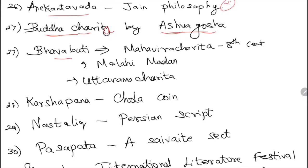Karshapana was a Chola coin. The word 'pana' or 'panam' means money in Tamil, which is why karshapana is a Chola coin.